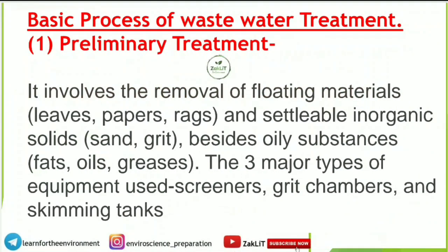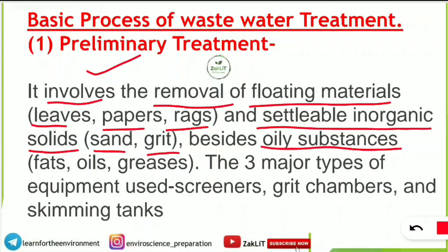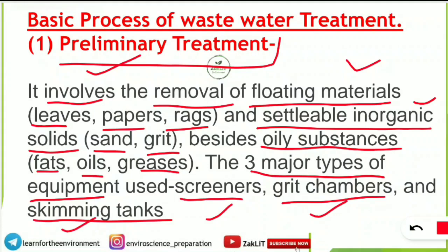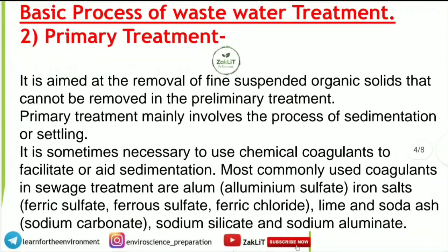The first step, preliminary treatment, involves the removal of floating materials. Along with sewage water, solid materials like leaves, paper, and rags come in — these are removed in this process. Settleable inorganic solids such as sand and grit, as well as oily substances, fats, oils, and greases are also removed. The three major types of equipment used in preliminary treatment are: screeners, grit chambers, and skimming tanks.